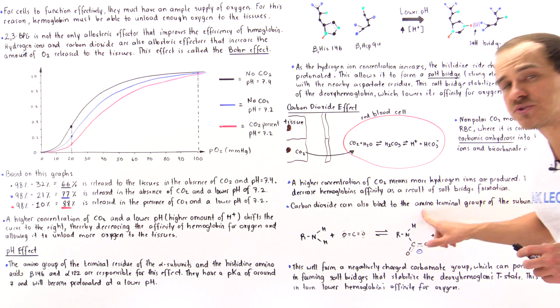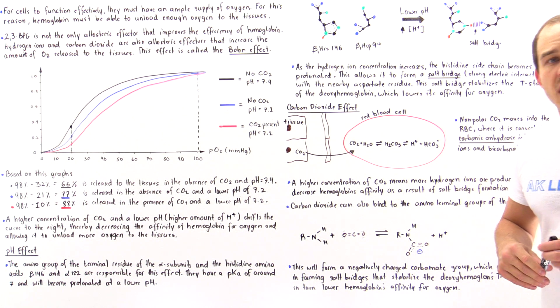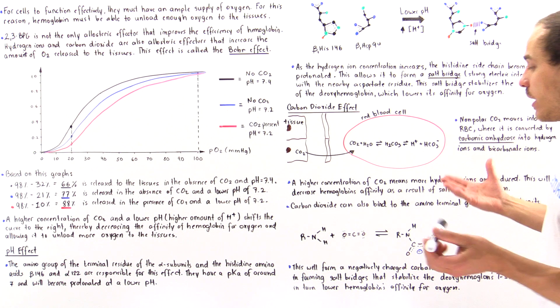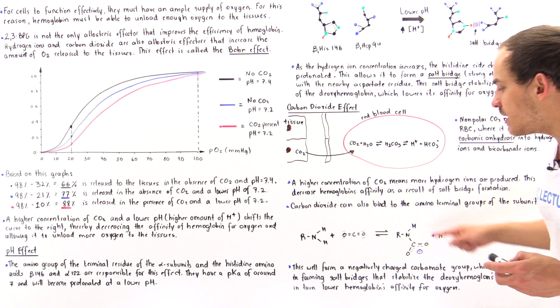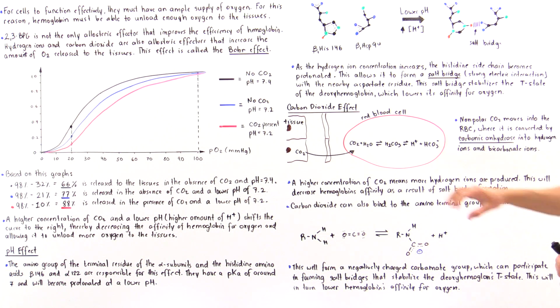the amino terminal groups of the four polypeptide chain. So to see what that actually forms, let's take a look at the following equation.